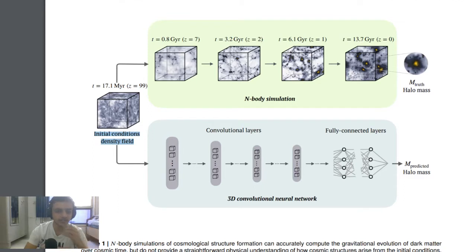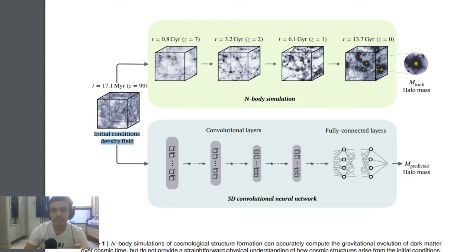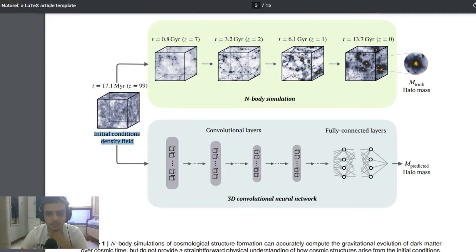This is the initial conditions density field. It's a time evolution of this n-body simulation, starting from a data cube that is highly redshifted — representing the early universe. That's the initial condition. Then slowly we see the halo mass starting to form and galaxies start forming as the time evolution goes. This is also fed to the 3D CNN.